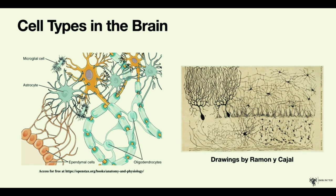On the left, there is an image showing how all of these different cells interact with each other. The neurons are contacted by many of these cells, especially the astrocytes — and we will see the intricate connection between astrocytes and neuronal synapses in the next lecture. On the right is a sketch made by one of the fathers of neuroscience, Ramón y Cajal, who sketched all the cells he saw in histological sections from human brains. This drawing also shows the diversity of cell shapes and the many interconnections between them.